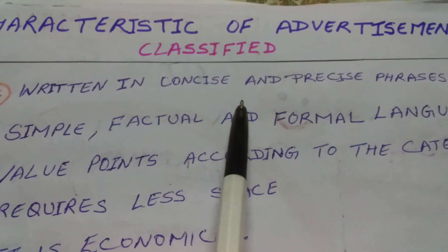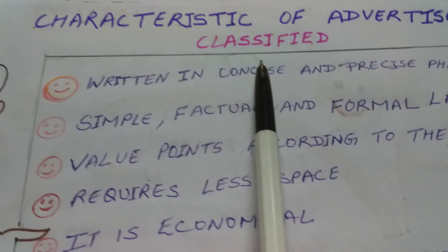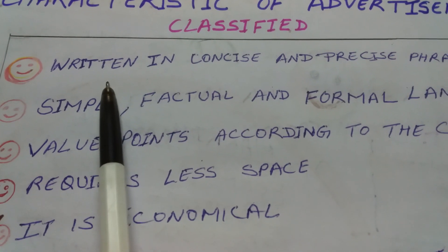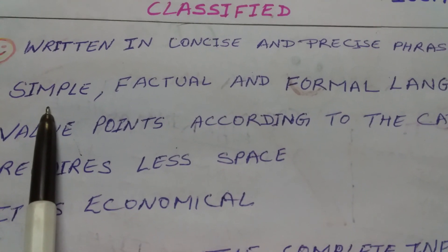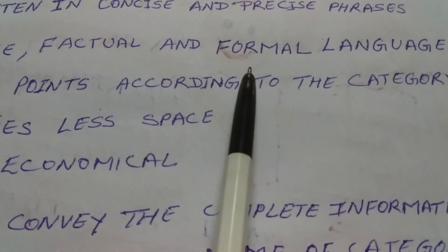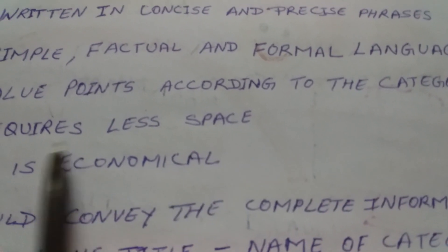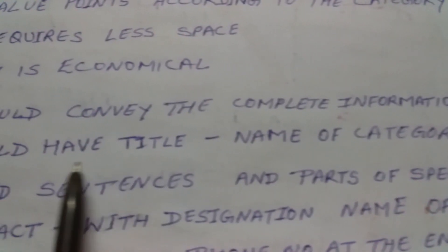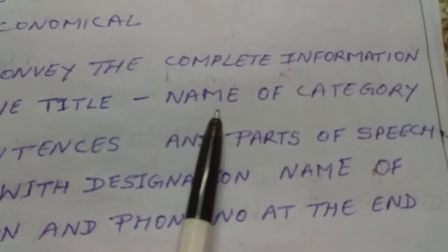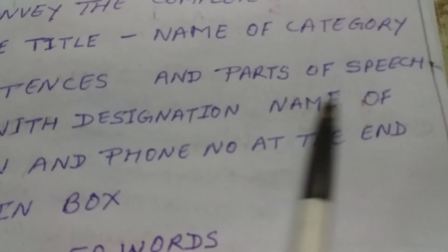What are the characteristics of classified advertisements? Characteristics of classified advertisements: It is written in concise and precise phrases. It should be followed with simple, factual and formal language. Value points should be added according to the category. It requires less space. It is economical. It should convey complete information. It should have a title according to the category. We should avoid full sentences and parts of speech.